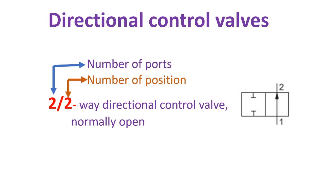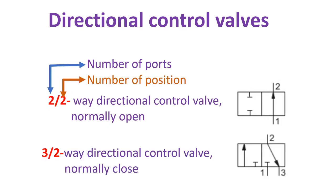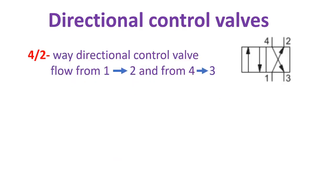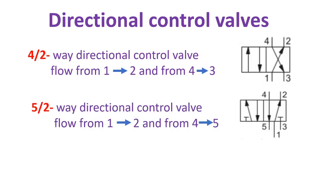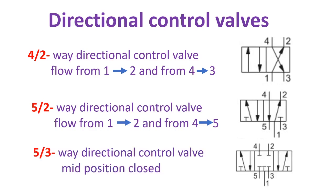This valve is a two-two-way directional control valve, normally open. The next one is a three-two-way directional control valve, normally closed. The next is a four-two-way, flow from 1 to 2 and from 4 to 3. Then a five-two-way, flow from 1 to 2 and from 4 to 5. Next, a five-three-way directional control valve, main position closed.